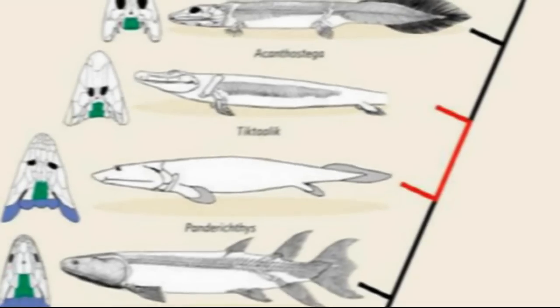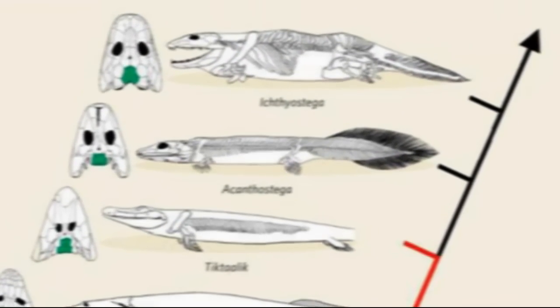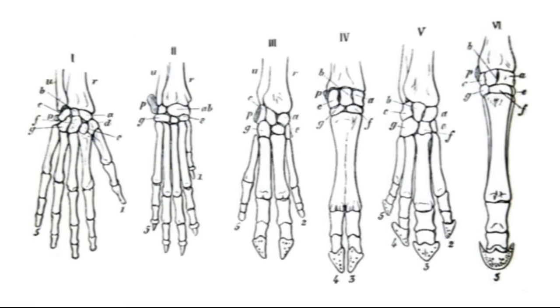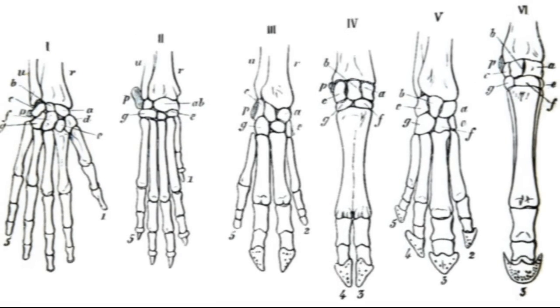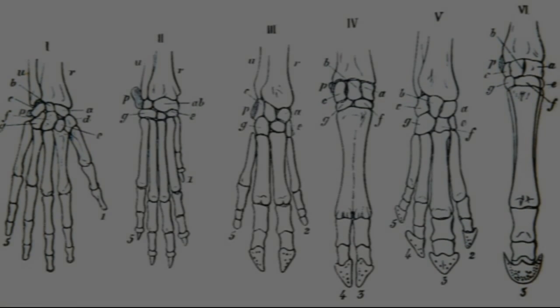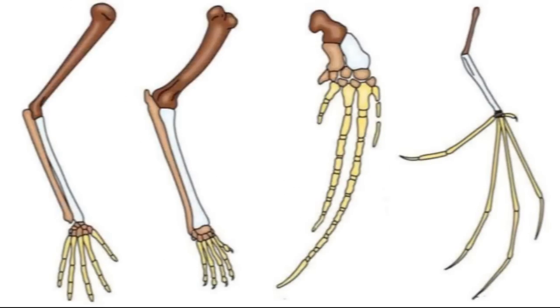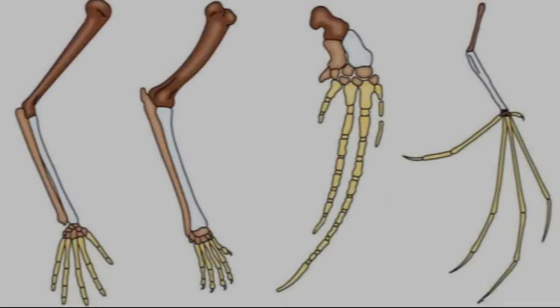A common theme within evolutionary biology is descent with modification, which is evidenced by observing anatomical similarities between species grouped in related taxonomic categories. For example, many mammals such as humans, cats, whales, and bats have closely related skeletal elements that make up their forelimbs, although these appendages have very different functions.